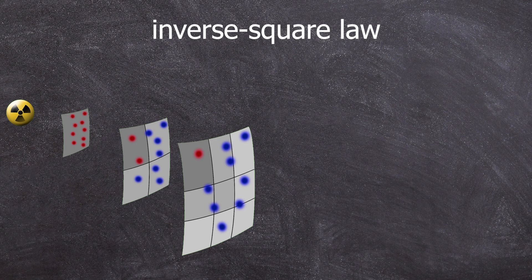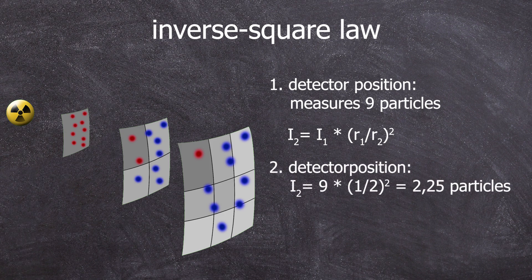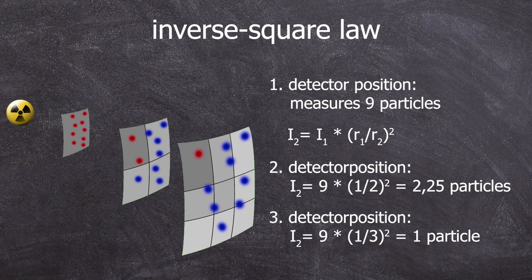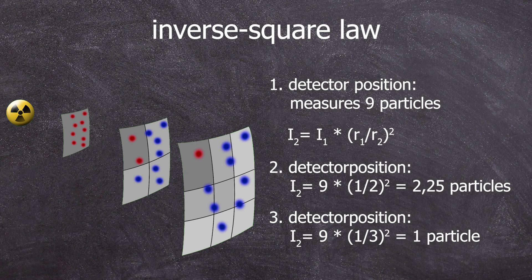This relationship between distance and measured radioactivity is quadratic. At distance a, the first detector plate measures, let's say nine particles. At distance 2a, it only measures 2.25 particles. And at 3a distance, it only measures one particle. Therefore, we observe an efficiency drop from 17 to 2 percent.